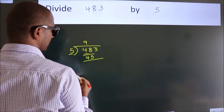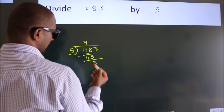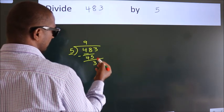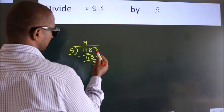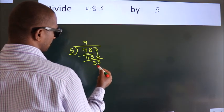Now we should subtract, we get 3. After this, bring down the beside number. So 3 down. So 33.